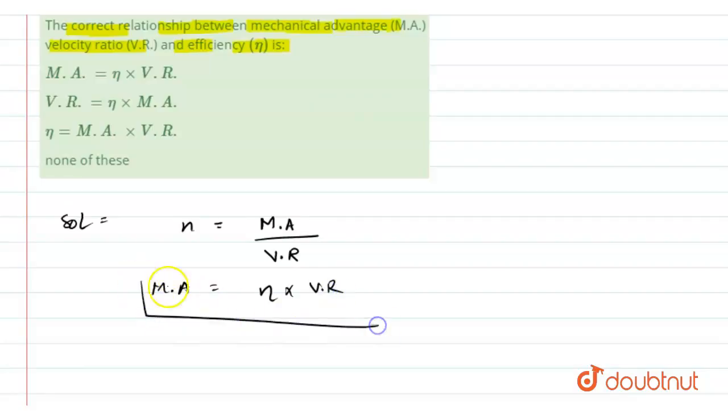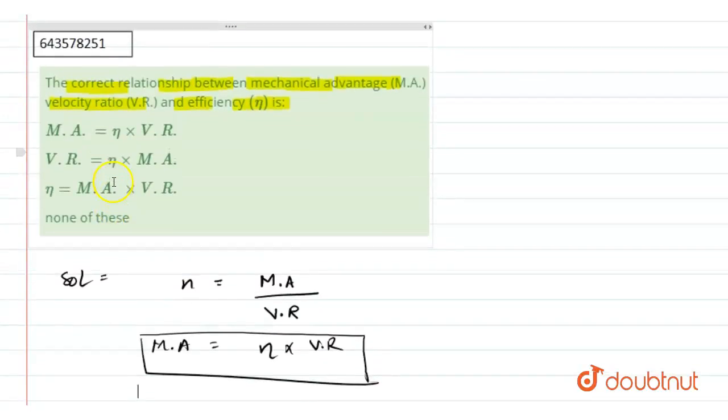ratio. So this relation, that is our first option. Hence, our correct option will be our first option. Hope this